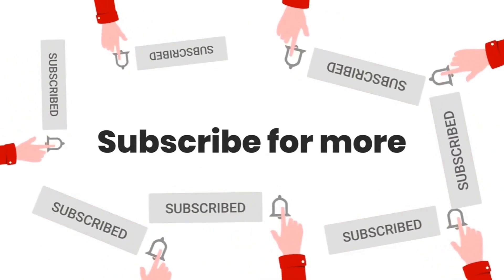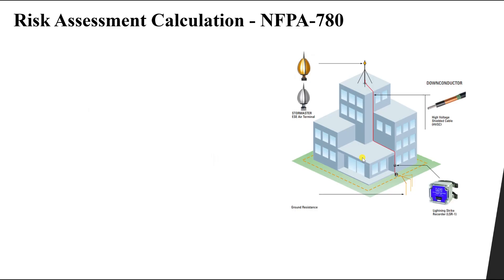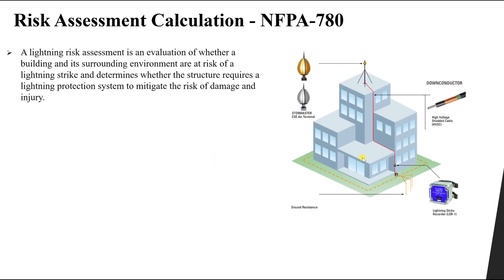Let's start the first step in design, which is the risk assessment. The risk assessment is used to evaluate whether our system or building and its surrounding environment are at risk of a lightning strike, and determines whether the structure needs a lightning protection system or not.